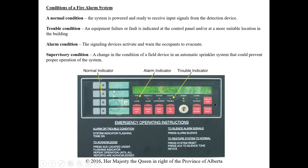The conditions a fire alarm system can be in: under normal condition it's powered and ready to receive input signals from field detection devices — smoke detectors, heat detectors, pull stations — waiting for a change in state. A trouble condition is not an alarm; it just indicates something isn't right with the system. It could be a broken wire, a loose wire, or a piece of field equipment not working properly — basically an open in the circuit.